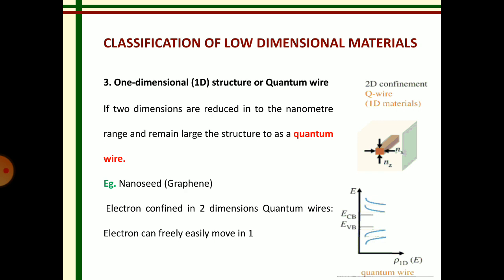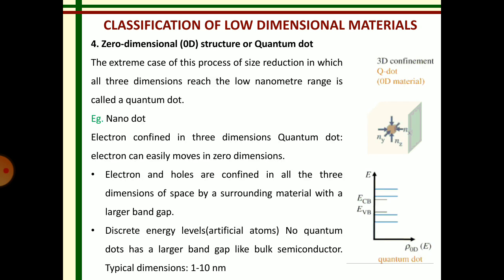The next type is four. Next, we are having zero dimensional structure. Here, all three dimensions are reduced to nanometer range. Then we will get the structure called quantum dot. Example: nano dot. Here, the electron can easily move in zero dimensions.